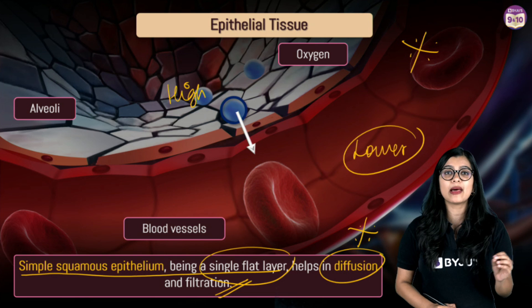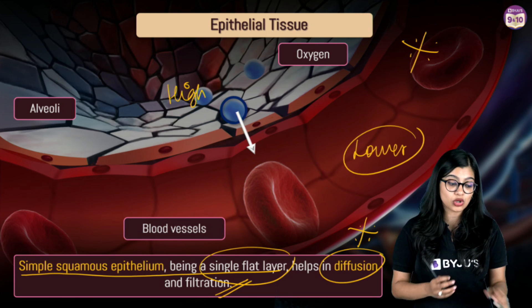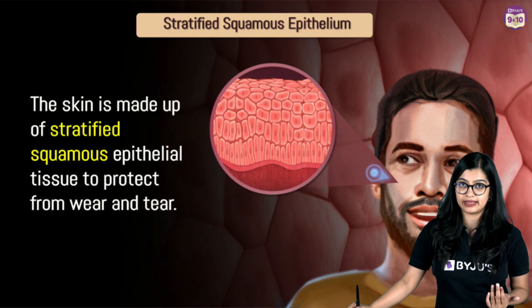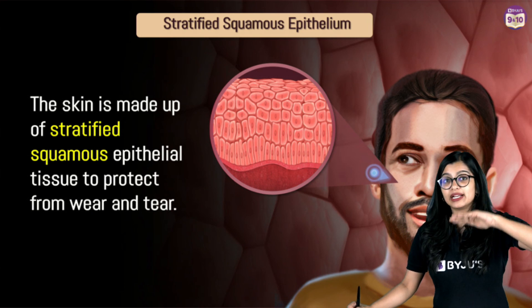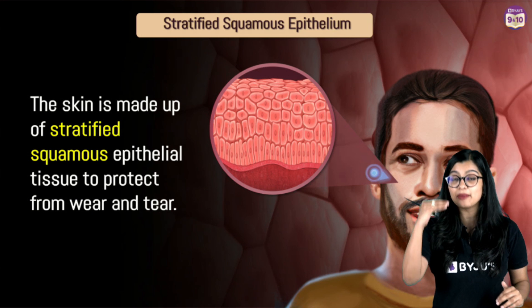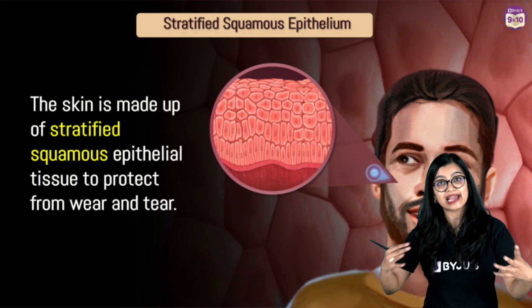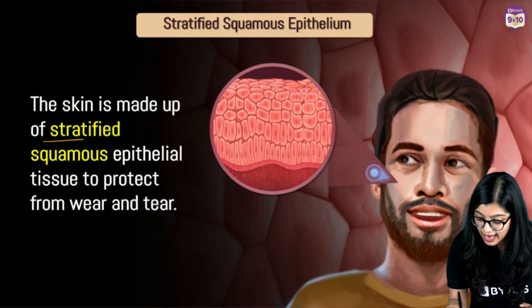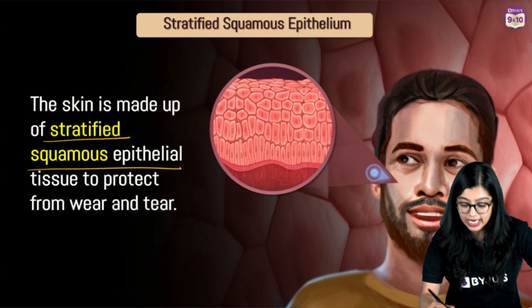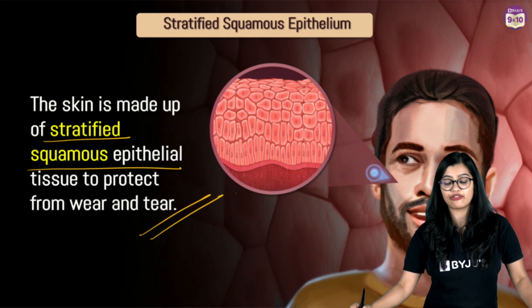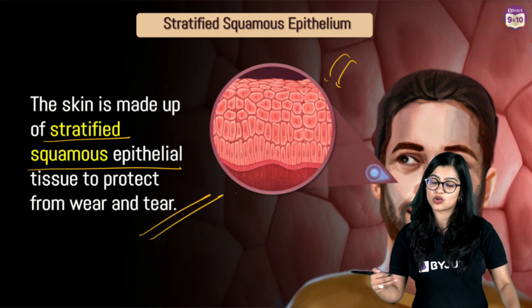That covers simple squamous epithelium. In some cases, there are also multiple layers of squamous cells, forming stratified squamous epithelium — for example, in our skin. Multiple layers provide protection from wear and tear.